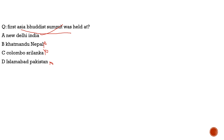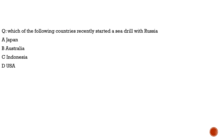The next question is: which of the following countries recently started a sea drill with Russia? A news article read: 'Joint Russia sea drill signals start of a foreign policy shift.' This country is acting like India — believing in non-alignment, not aligning to a particular country. The options include Japan, Australia, USA, and Indonesia. The correct answer is Indonesia — it started a joint Russia sea drill signaling Indonesia's new foreign policy shift. The correct option is C.